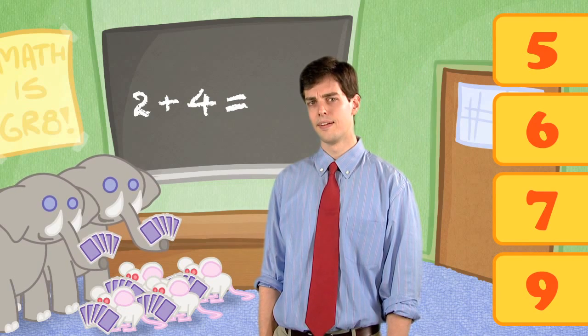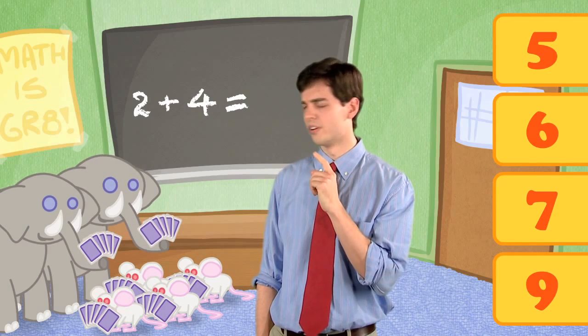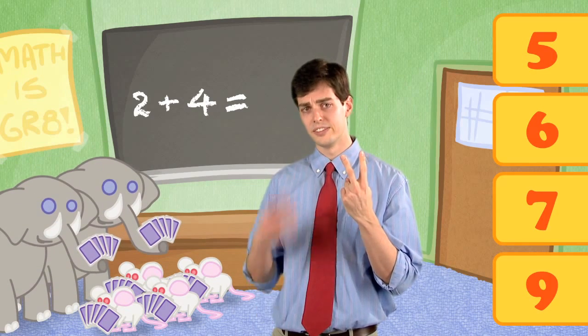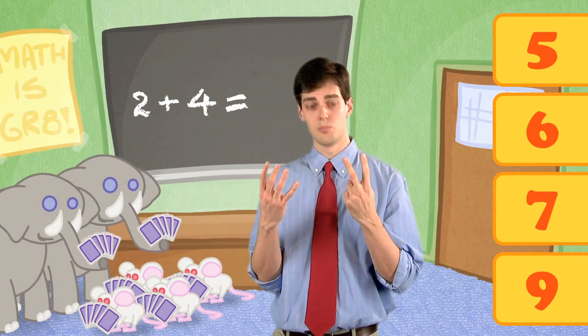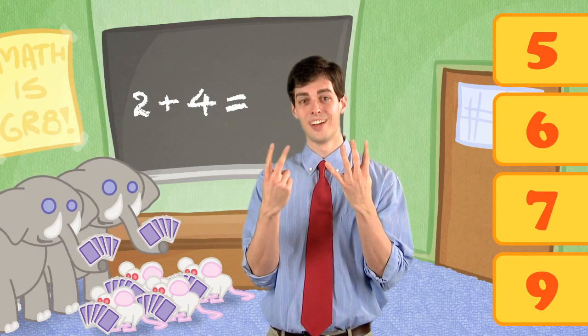Wait a minute. I don't think that's right. Remember, there are two elephants and four mice. That's two plus four, or four plus two. Try again.